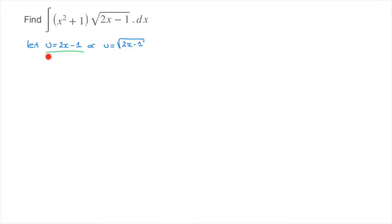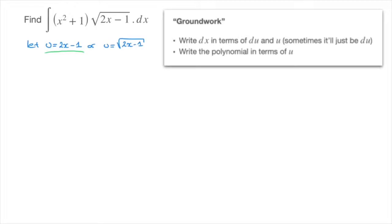Now that we know u equals 2x minus 1, we need to rewrite the entire integral in terms of this new variable u. For that, we need to find an expression for any x inside this polynomial — specifically, we need to rewrite x squared in terms of u. Similarly, we need to find what dx would be in terms of du.